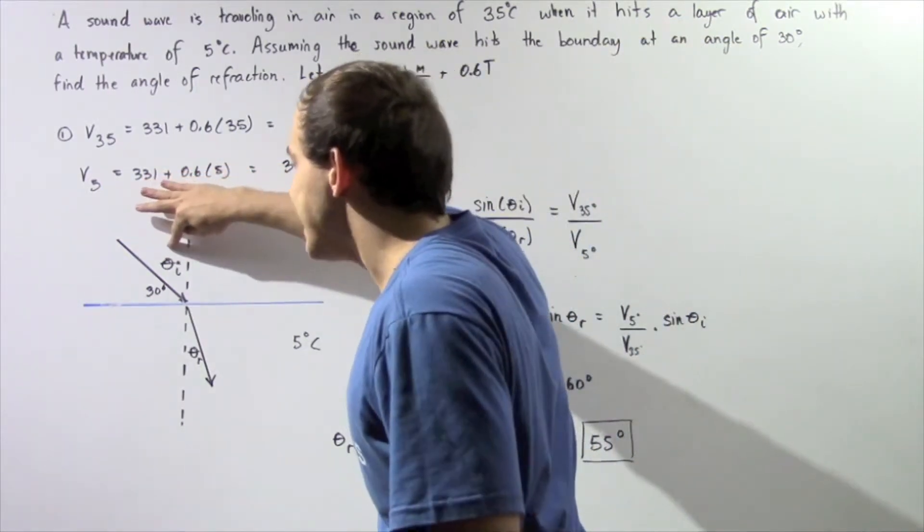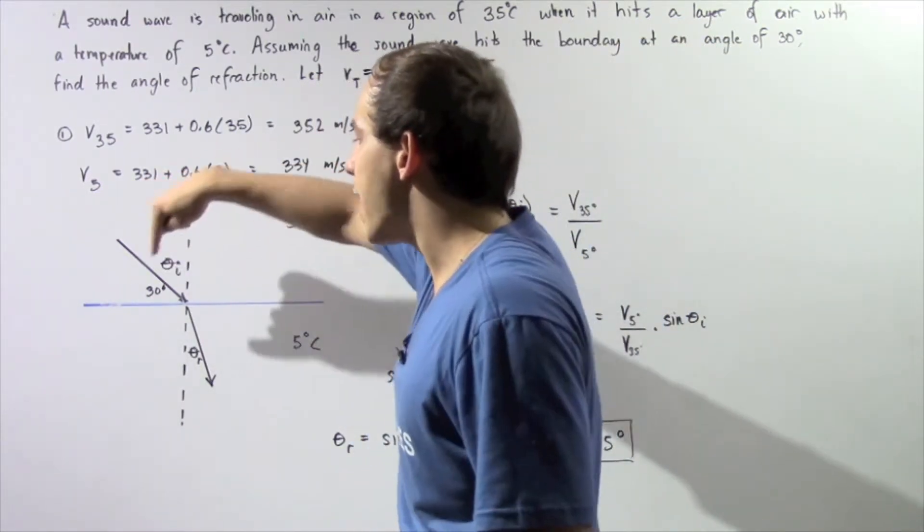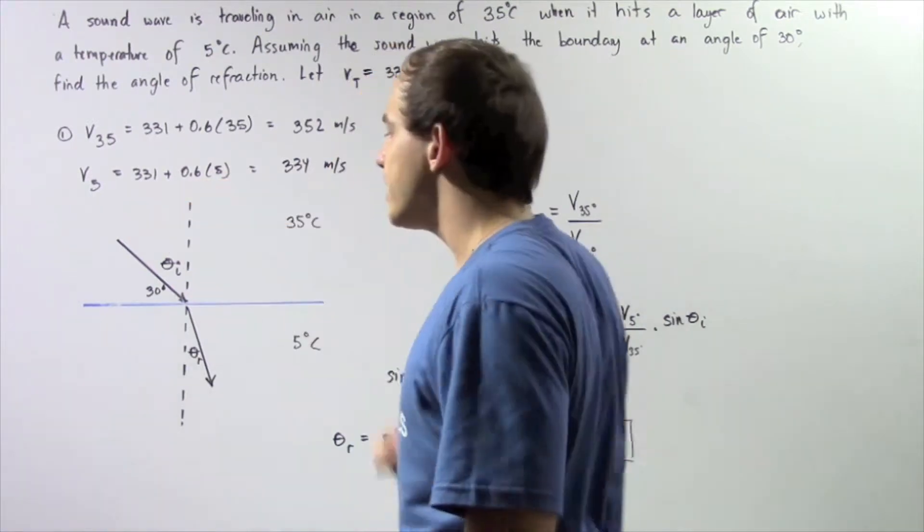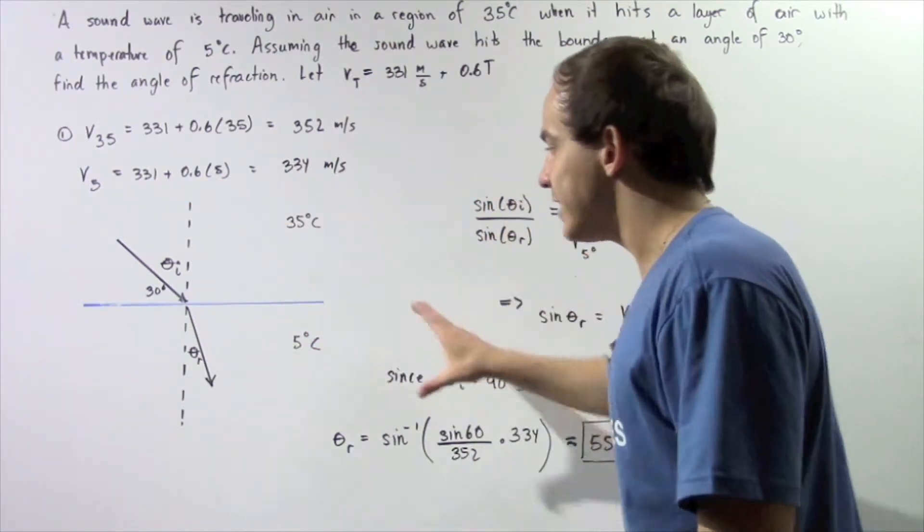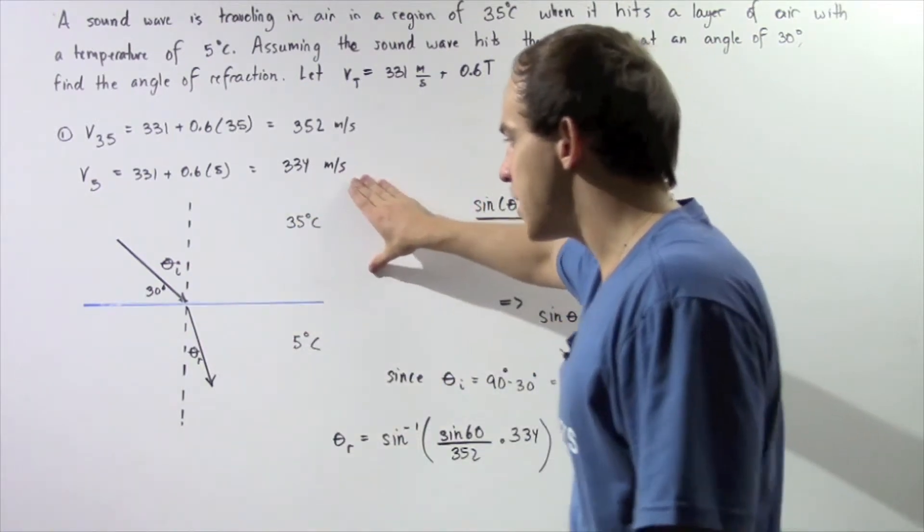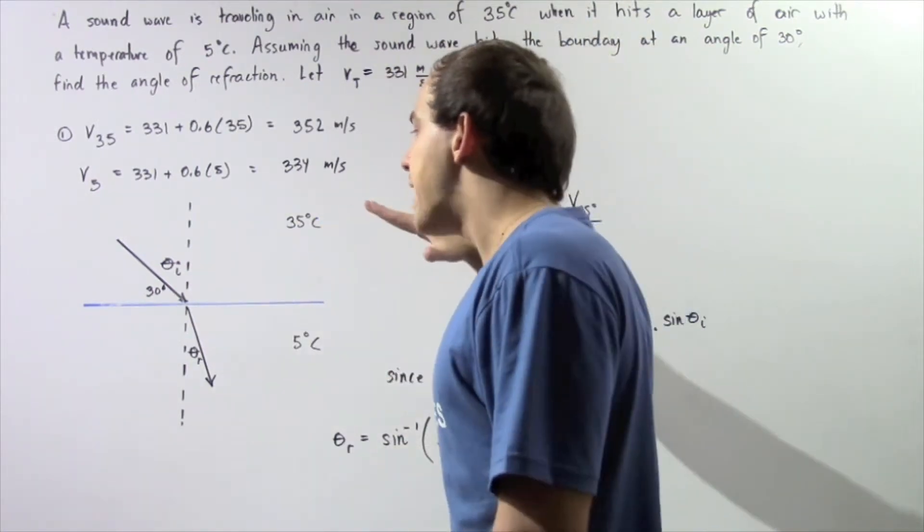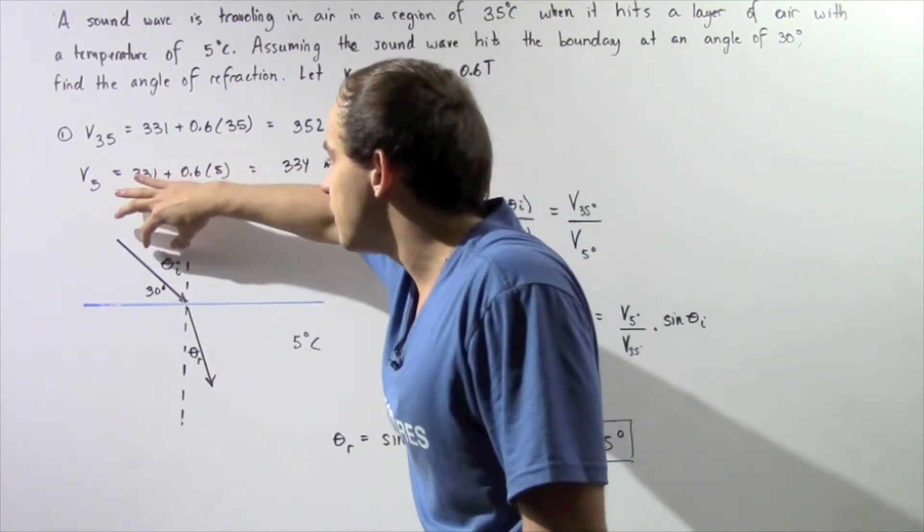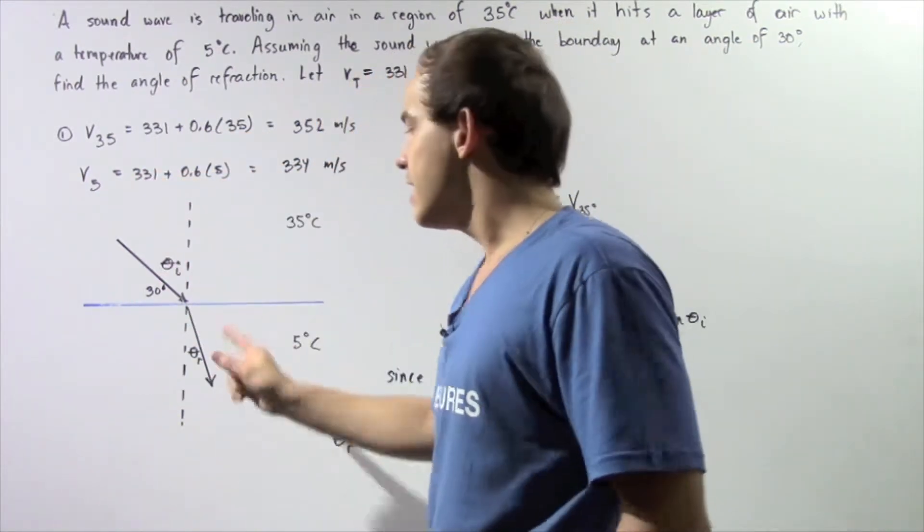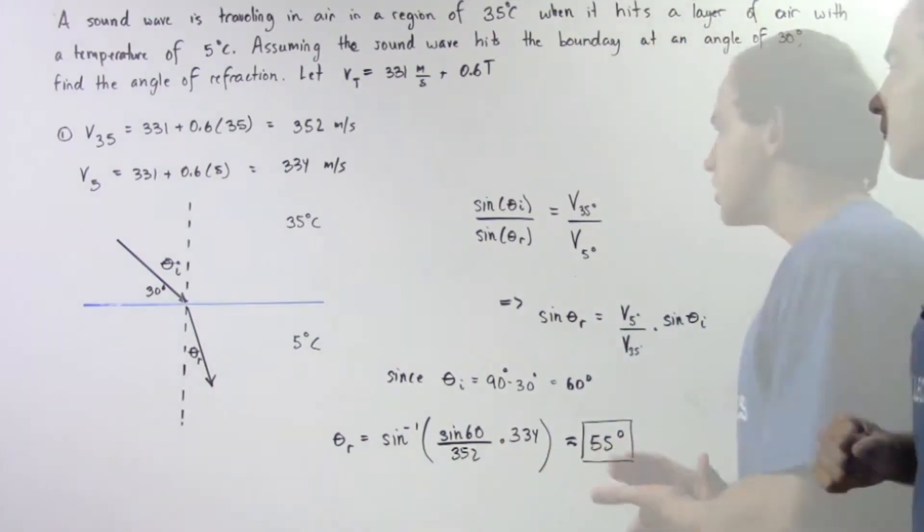That means the angle of incidence is 90 minus 30, so 60 degrees. Now because the velocity is lower in this region than this region, that means our ray will bend towards our vertical axis as shown, and the angle of incidence will be greater than the angle of refraction.